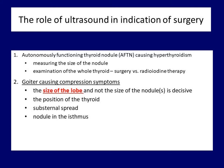The next role of ultrasound is establishing substernal spread. Ultrasound is the tool which defines the presence and degree of substernal spread. The demonstration or exclusion of substernal spread influences both the decision on surgery and the need for a preoperative neck and upper mediastinal CT scan. As a rule, a neck and upper mediastinal CT scan should be performed if the lower pole of the thyroid cannot be visualized during swallowing.